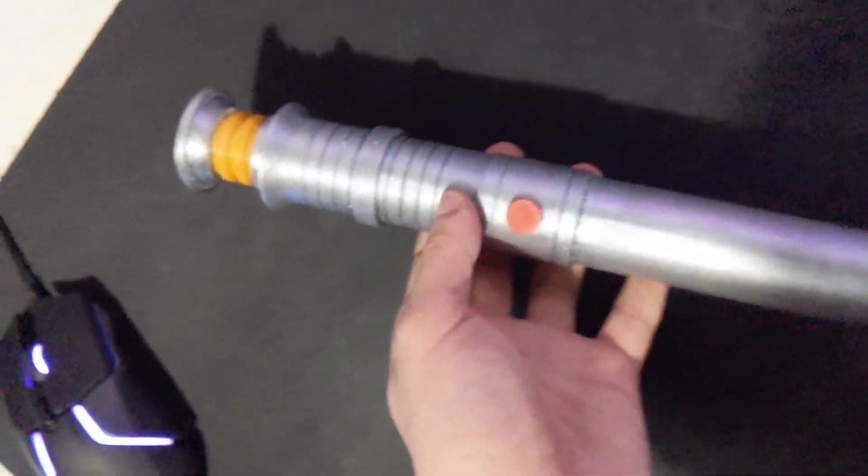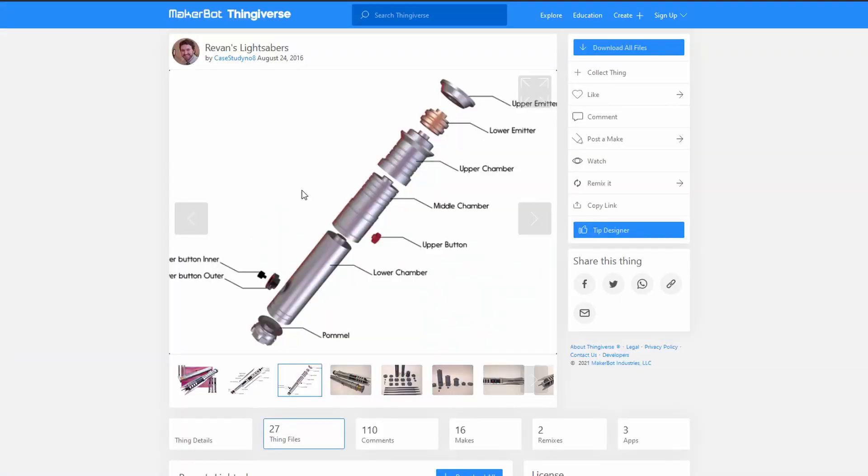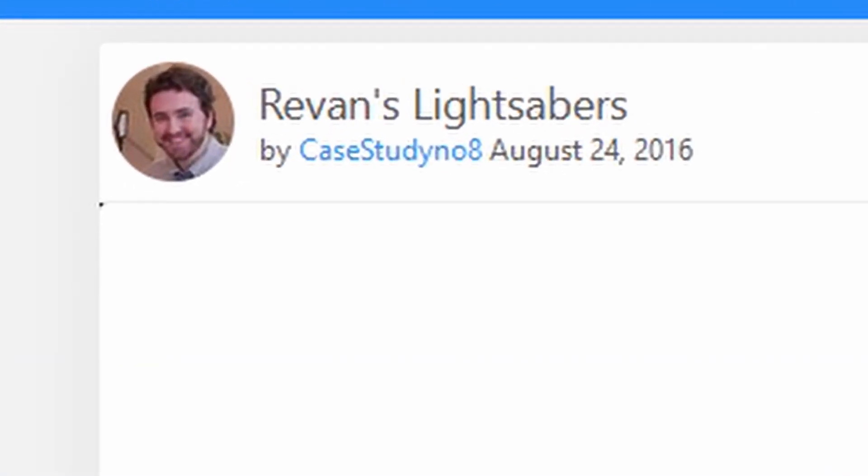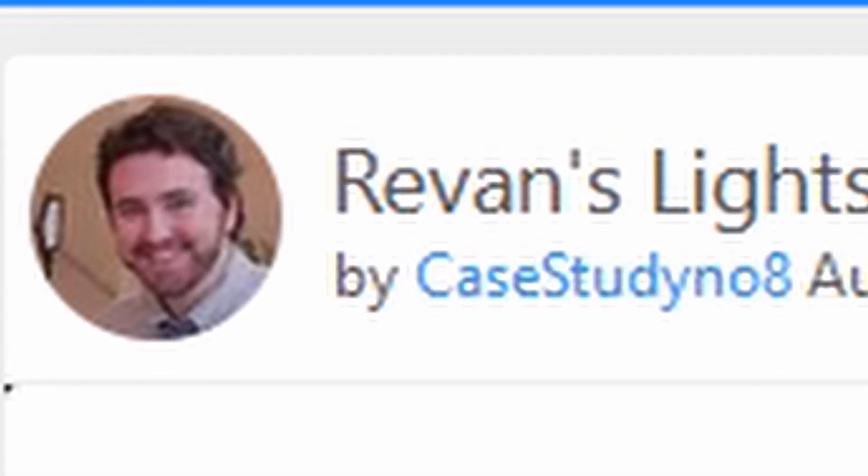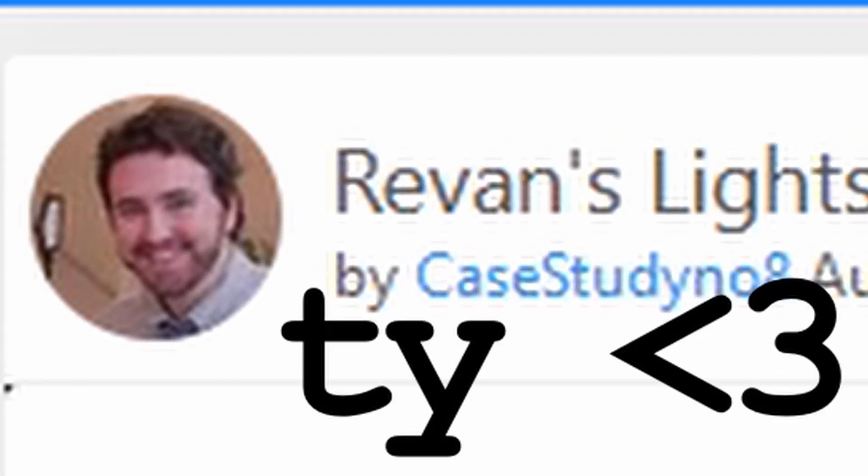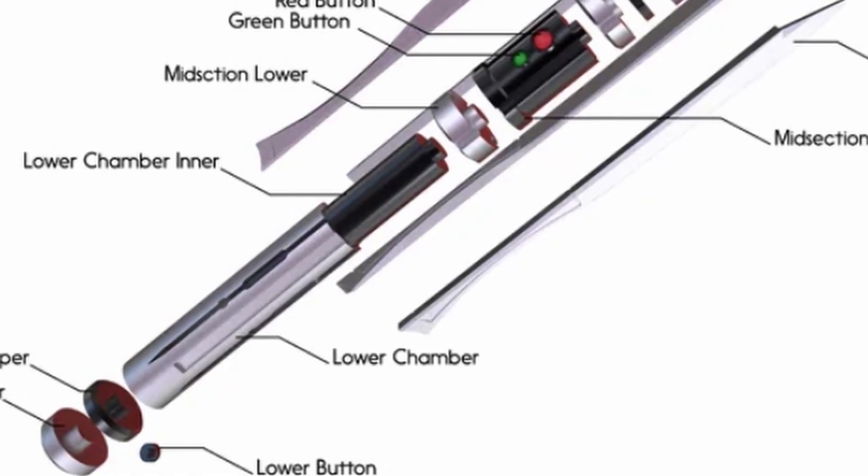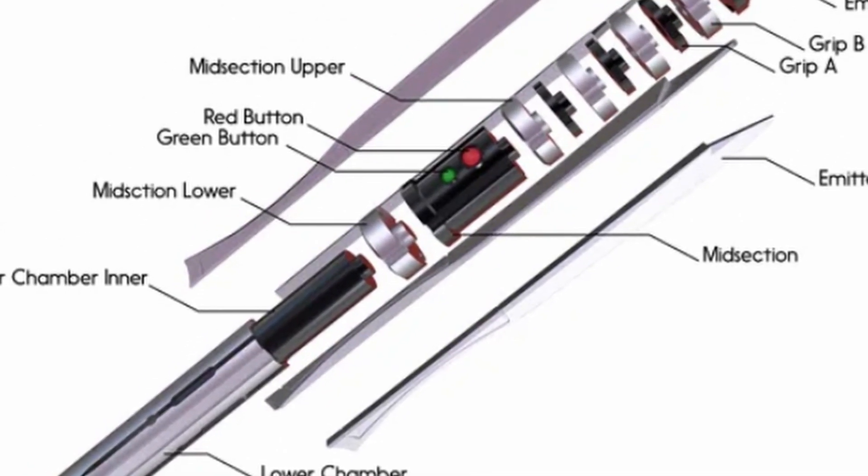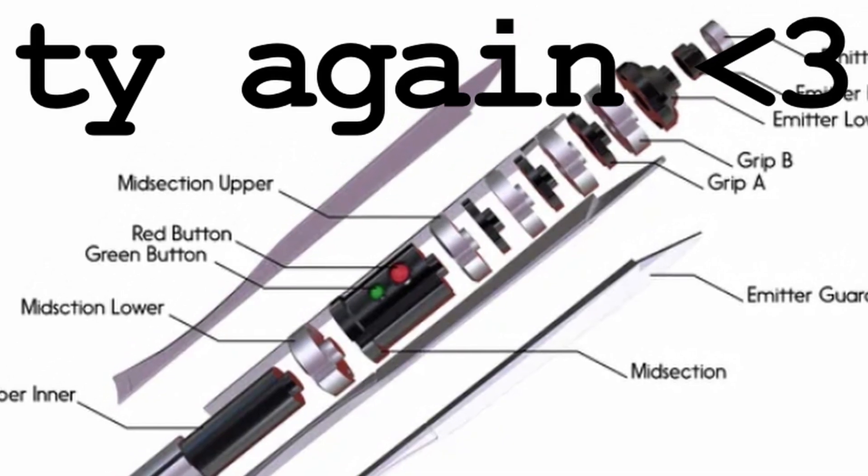The first step is obviously to 3D print the lightsaber. I got the file for this lightsaber from case study number 8 on Thingiverse. I'll leave a link to the page in the description of this video for you to check out, big shout out to that person. He's also got the files for Revan's purple lightsaber, which I'll be making a video on soon.